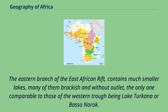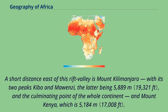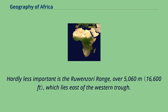The eastern branch of the East African Rift contains much smaller lakes, many of them brackish and without outlet, the only one comparable to those of the western trough being Lake Turkana or Basso Narok. A short distance east of this rift valley is Mount Kilimanjaro, with its two peaks Kibo and Mawenzi, the latter being 5,889 meters, the culminating point of the whole continent, and Mount Kenya, which is 5,184 meters. Hardly less important is the Ruwenzori range, over 5,060 meters, which lies east of the western trough.